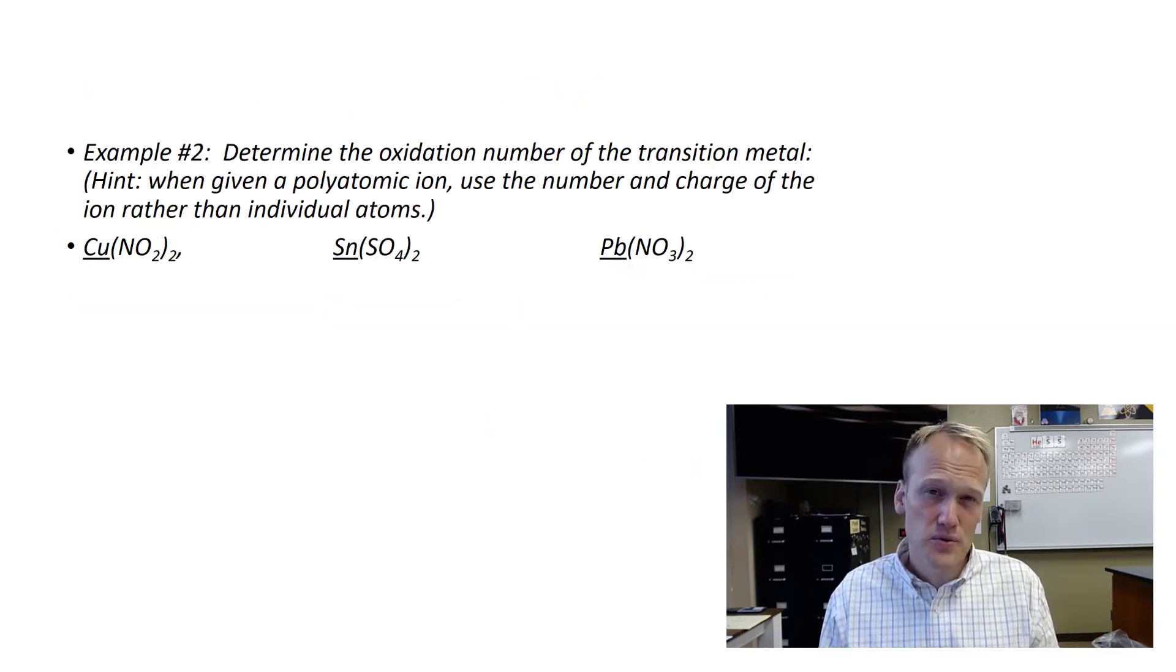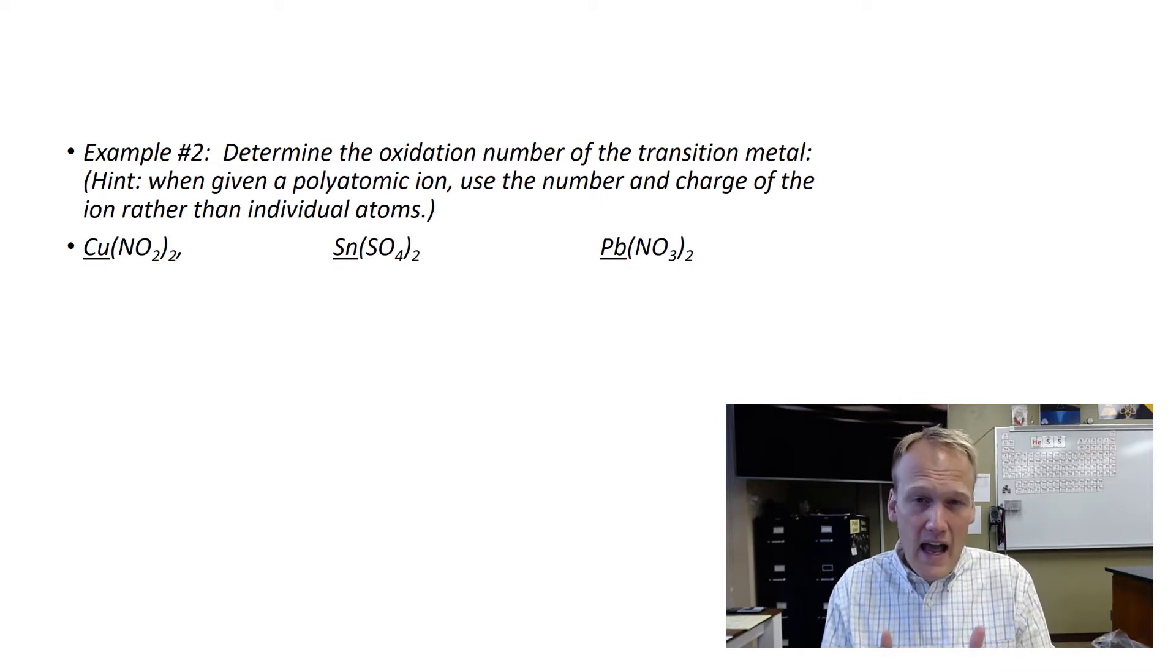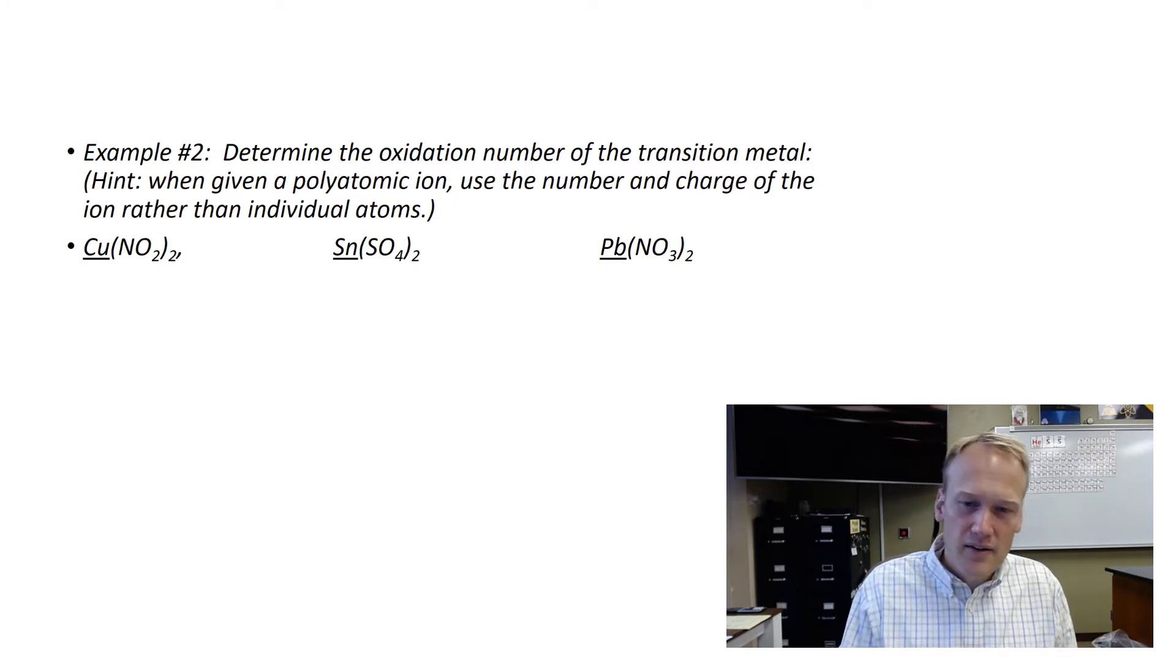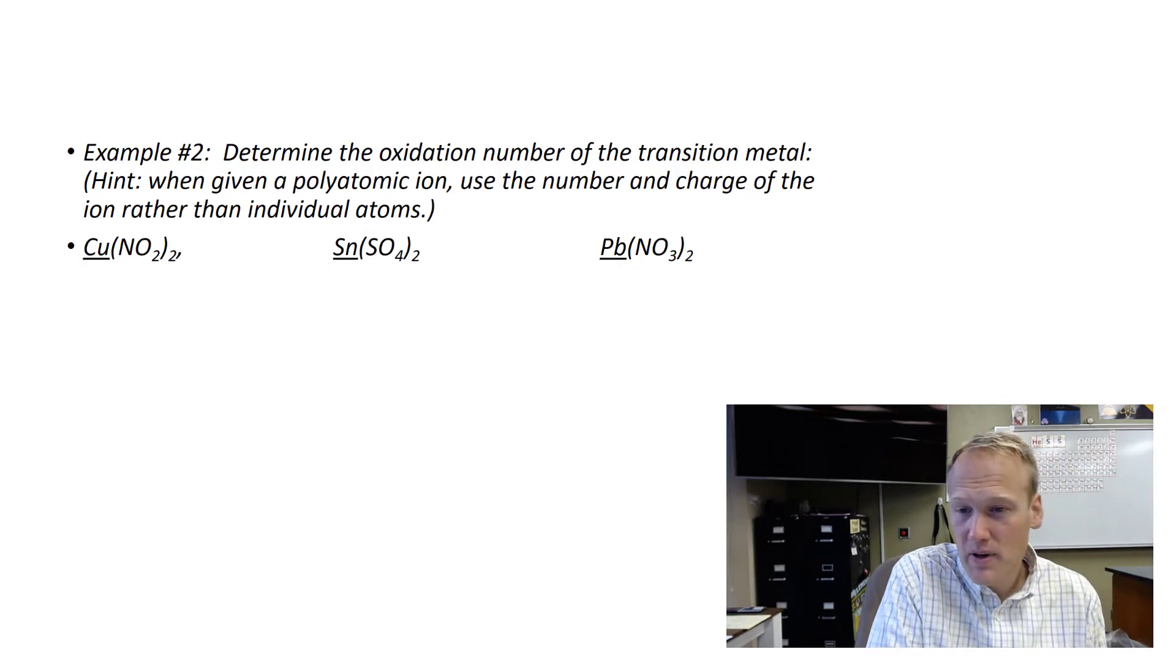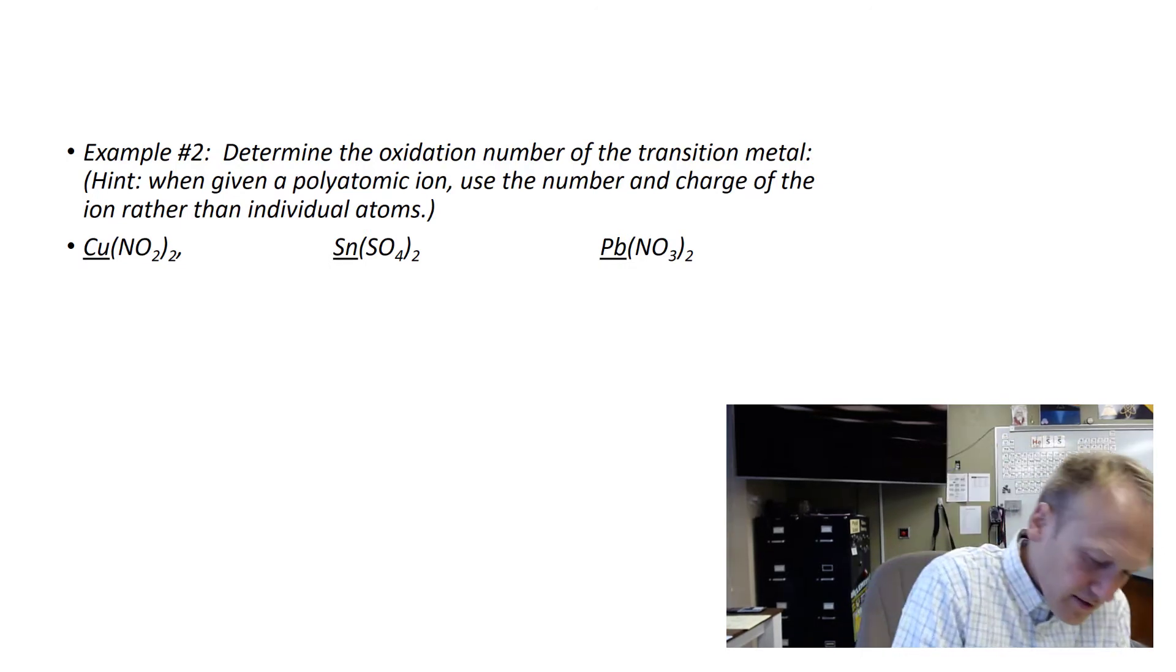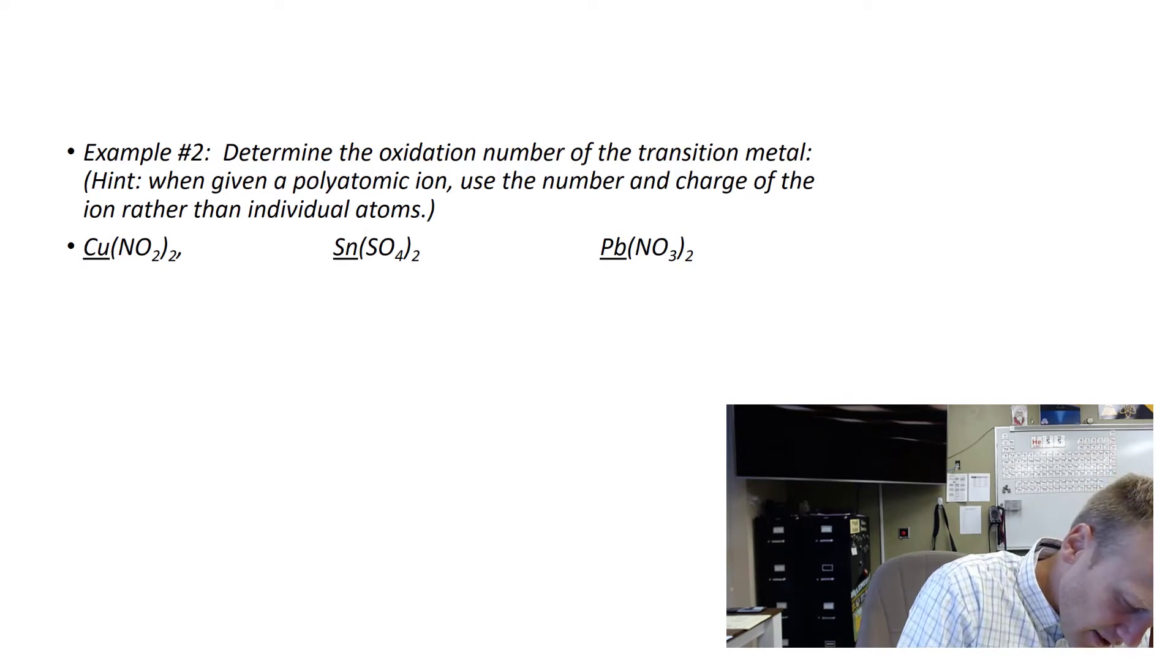So the idea is we can use those rules to determine the charge of any element within a compound. This really just comes down to some basic algebra. So let's look at copper nitrate here. We have one copper and it is underlined, which means that's the charge they want us to identify.